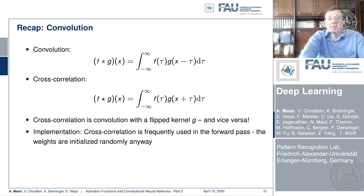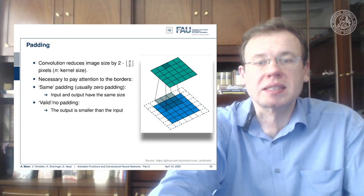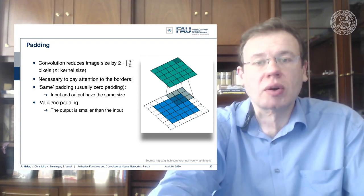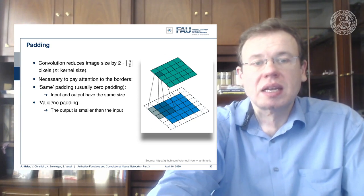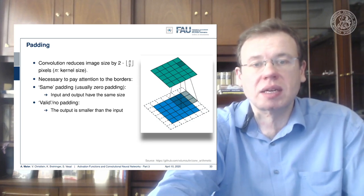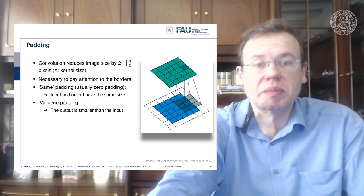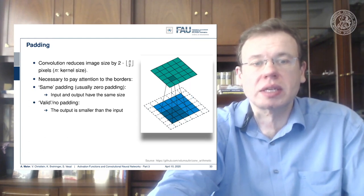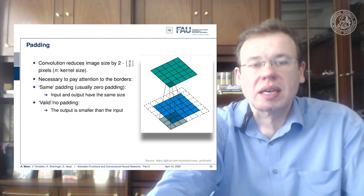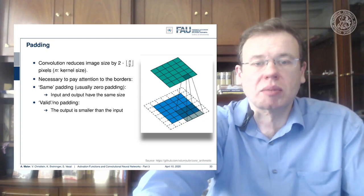If you want to compute the convolution kernel at the very boundary pixels, your receptive field would actually reach outside of the field of view. One way of dealing with this is to reduce the size of the feature map in the next layer. Or you can use padding — most commonly zero padding, where all values outside the image are set to zero, allowing you to remain at the same size and convolve the entire image. There are also other strategies like mirroring, but padding is probably the most common one.